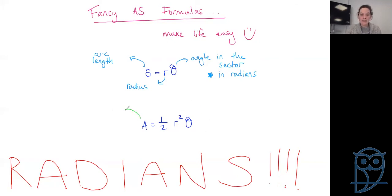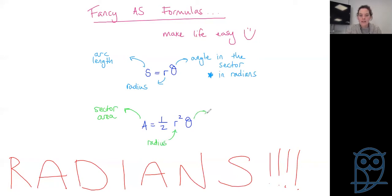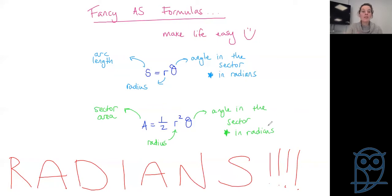A is sector area — the entire pizza slice. Half is a half, R is still radius, and theta is the angle in the sector, in radians. So these are fancy little formulas — so much more straightforward than all the work you do at IG level. But they must be done in radians. That is the one thing you take away from this entire lesson: when you start a circle geometry question, put your calculator in radians and forget that degrees ever existed.